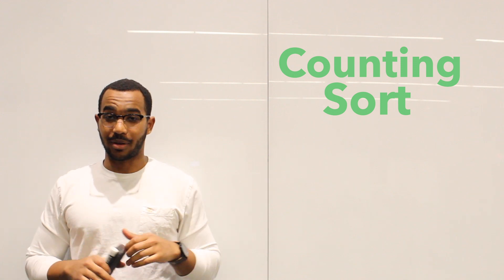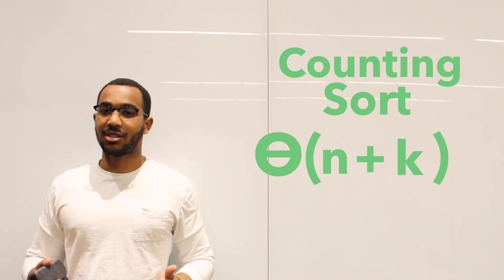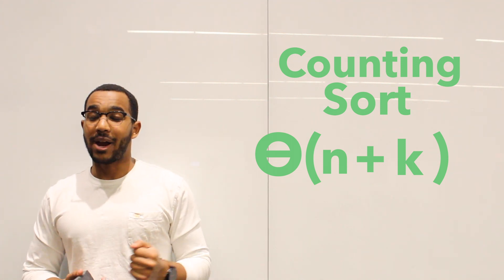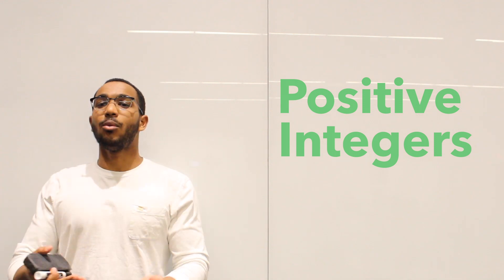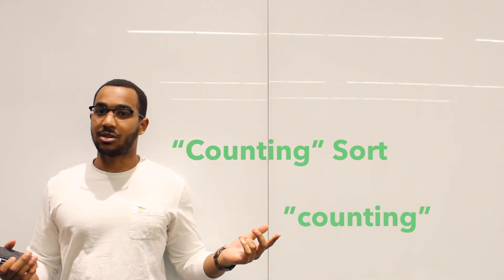Counting sort is a special sorting algorithm that runs in linear time with respect to two variables, k and n. The reason counting sort is interesting is because it's a special kind of sorting algorithm where we know something about the input. Remember all the other ones we've covered — merge sort, quick sort, heap sort, insertion sort, selection sort, bubble sort — for all of these, we did not know anything about the input. They could have been objects, integers, strings, floats, anything. But here we know that our input are all positive integers, and that's special. For counting sort, we're going to be counting occurrences.